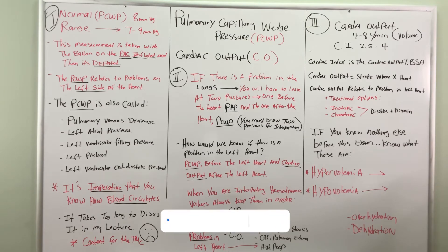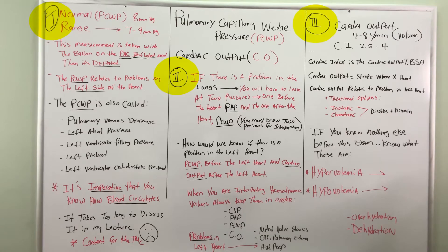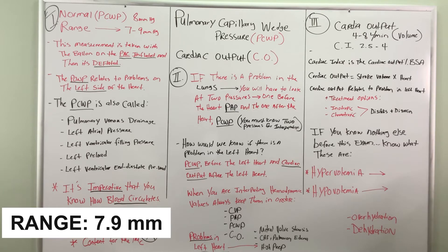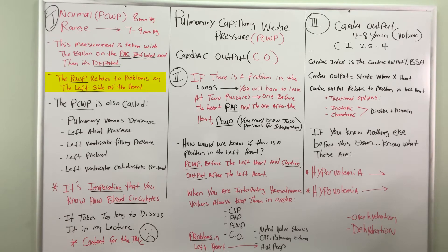Tonight we are continuing our hemodynamic parameters with pulmonary capillary wedge pressure and cardiac output. If you look to the left of the screen, row number 1, 2, and 3, I'll work from left to right. The normal PCWP is 8 — that target value has a range of 7 to 9 millimeters of mercury. To get a PCWP measurement, it is taken with the balloon on the pulmonary artery catheter, or the Swan-Ganz catheter, inflated. And as soon as you get that reading, that balloon is deflated. Remember that. The pulmonary capillary wedge pressure relates to a problem on the left side of the heart.